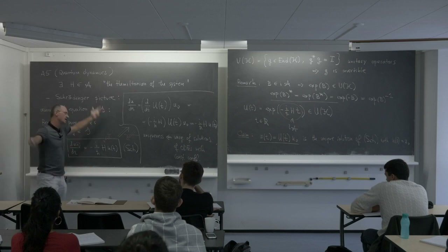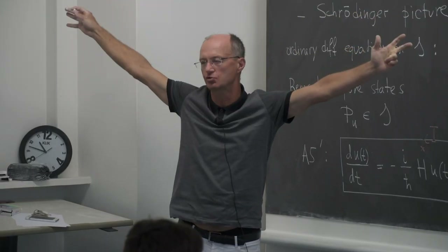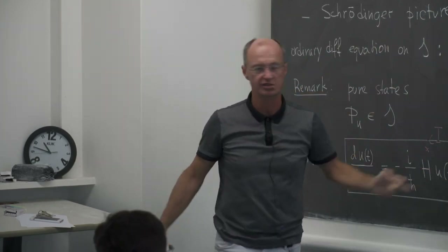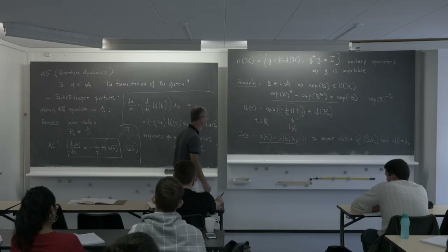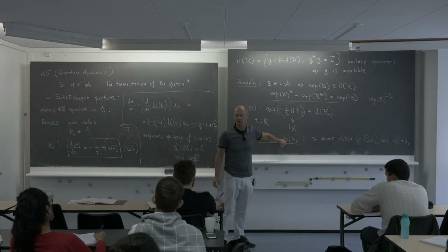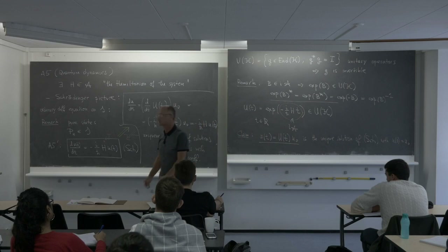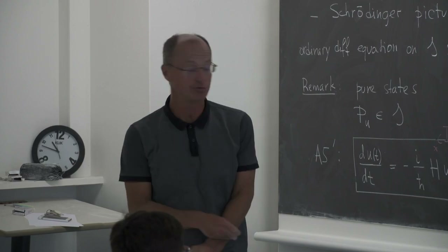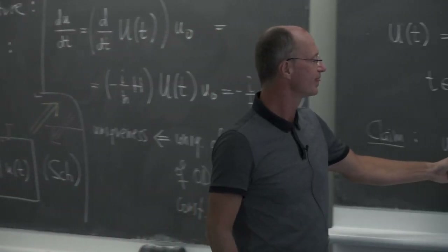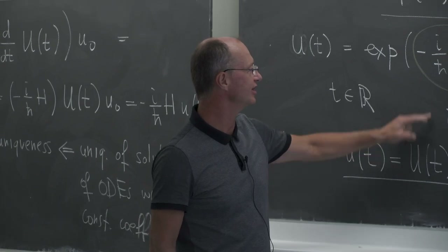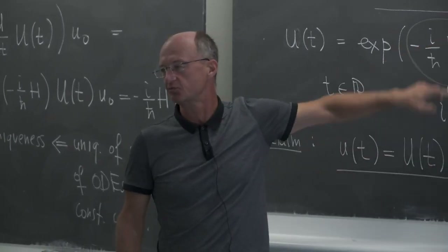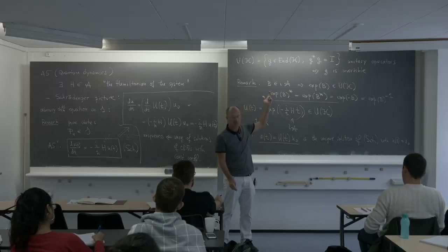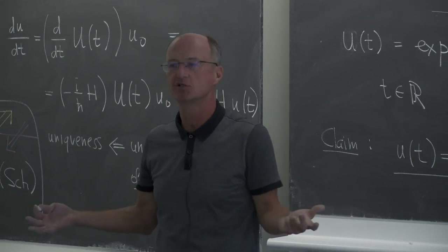When I teach first-year linear algebra and motivate unitary operators, I say: the Schrödinger equation describes any quantum system. If our quantum system is the universe, that is the equation which describes its evolution — H is some very large operator acting on a very large space. The solution U(t)u₀ is already sufficiently surprising: a single line contains all information on what happens everywhere.